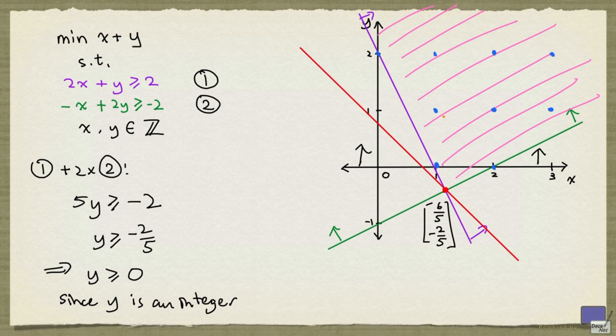And if we solve the resulting linear programming relaxation, we will see that the optimal solution is given by 1, 0. And this solves our original problem.